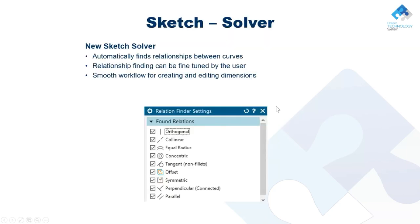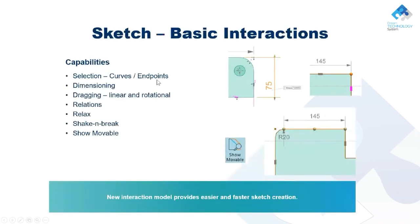Next topic: Sketch. In the latest NX version, they implemented a new sketch called Sketch Solver. This new sketch framework automatically finds relationships between curves, reducing mouse clicks. The relationship finding can be fine-tuned by the user — you can define what relationship is inferred when you move or drag a curve. There's also a new workflow for creating and editing dimensions directly by selecting curves without needing to invoke the Rapid Dimension command separately.